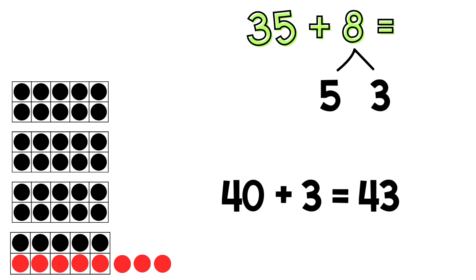Your equation should have been 40 plus 3 equals 43, which means 35 plus 8 equals 43. How did you do? You just learned a strategy to make it easier to solve 2 digit plus 1 digit addition equations. When you turn your first addend into a 10, the problem is easier to solve.